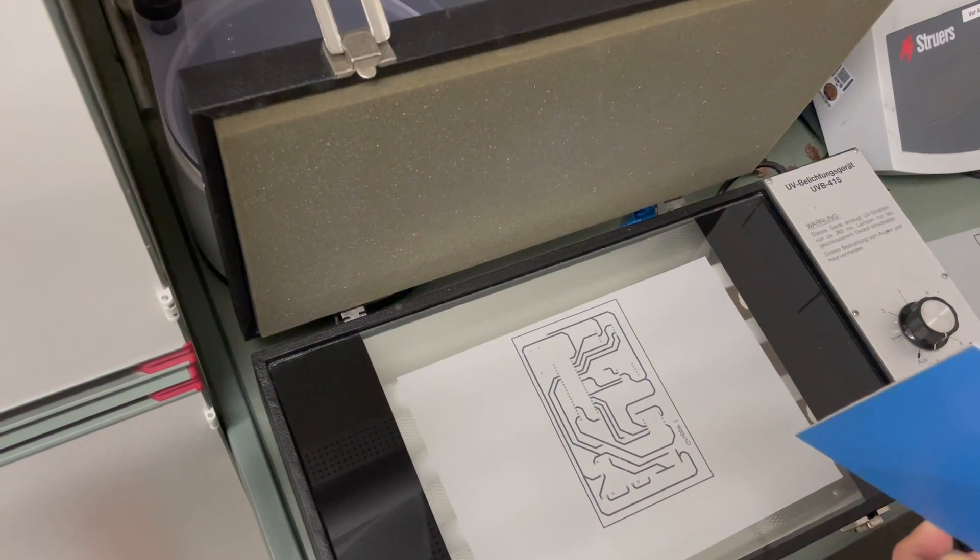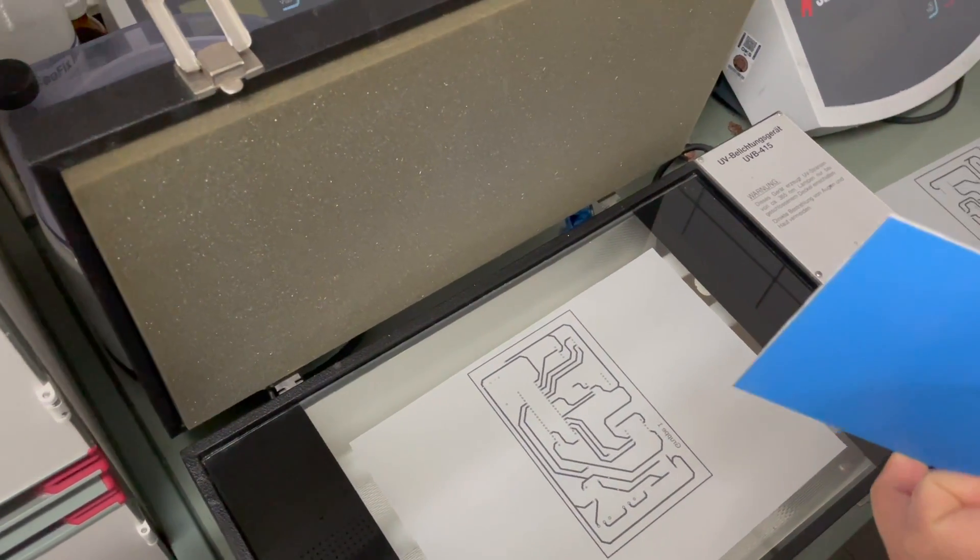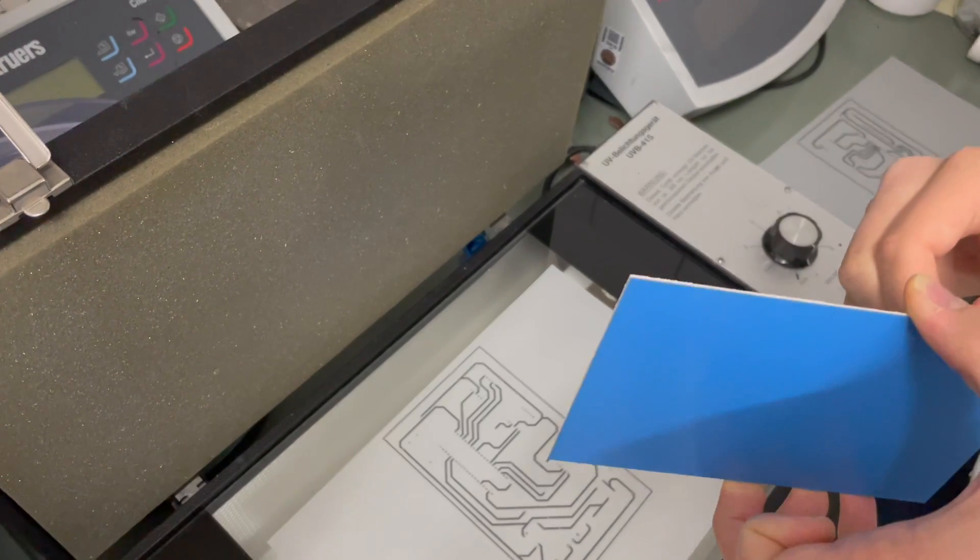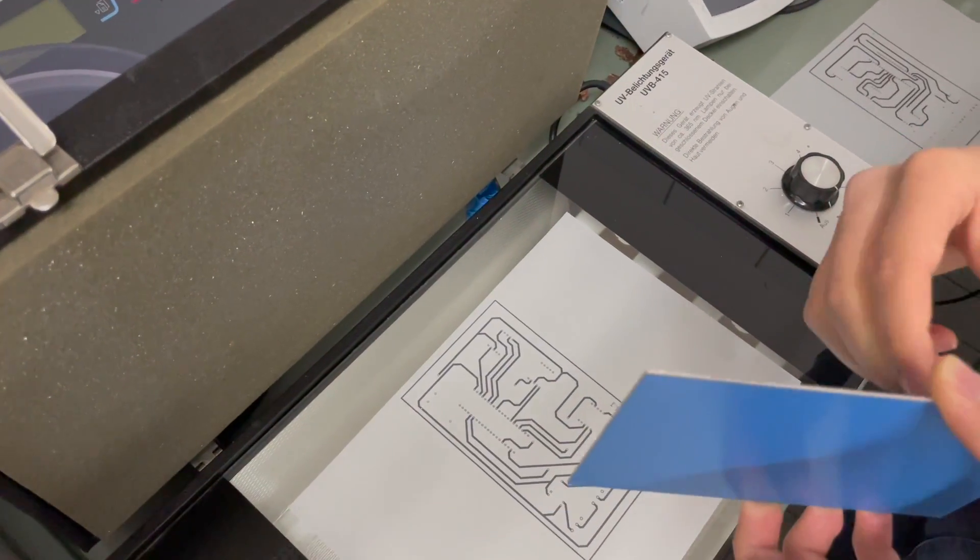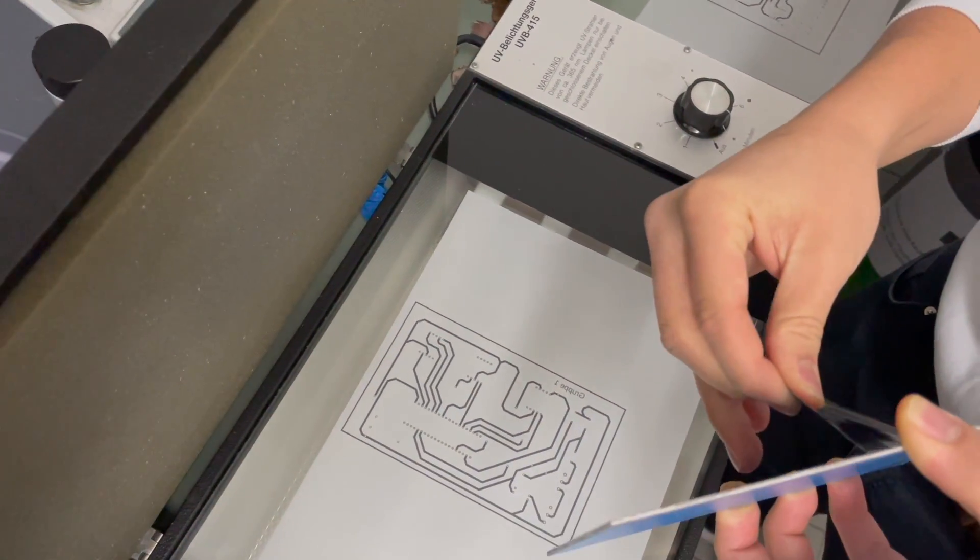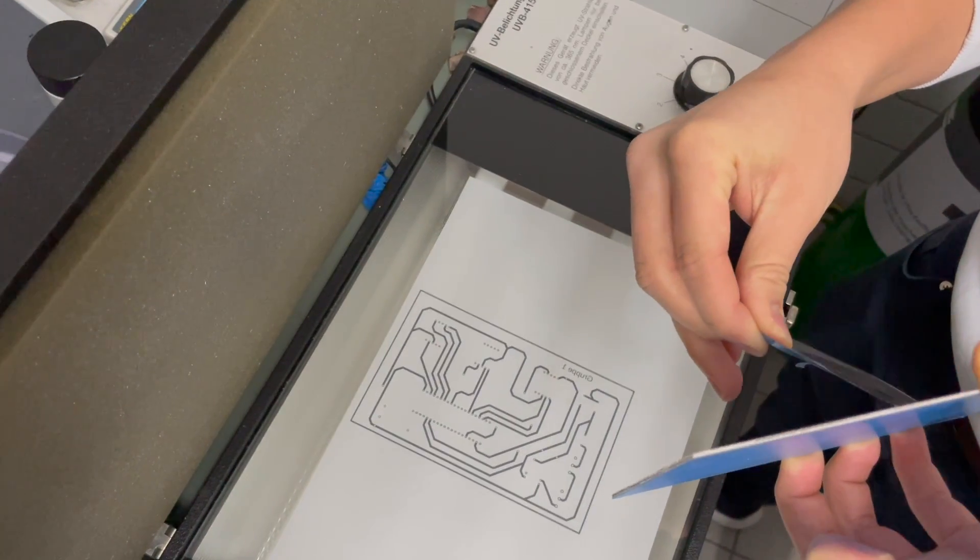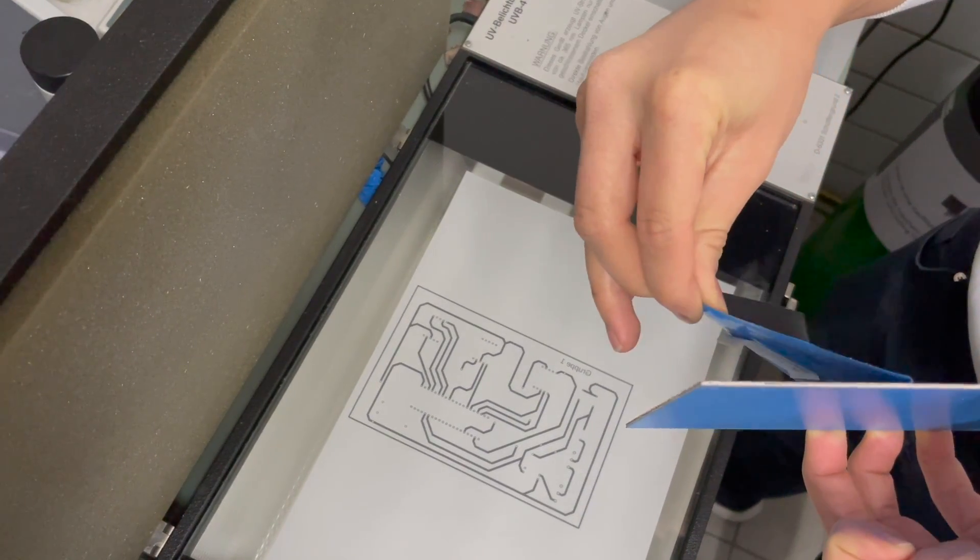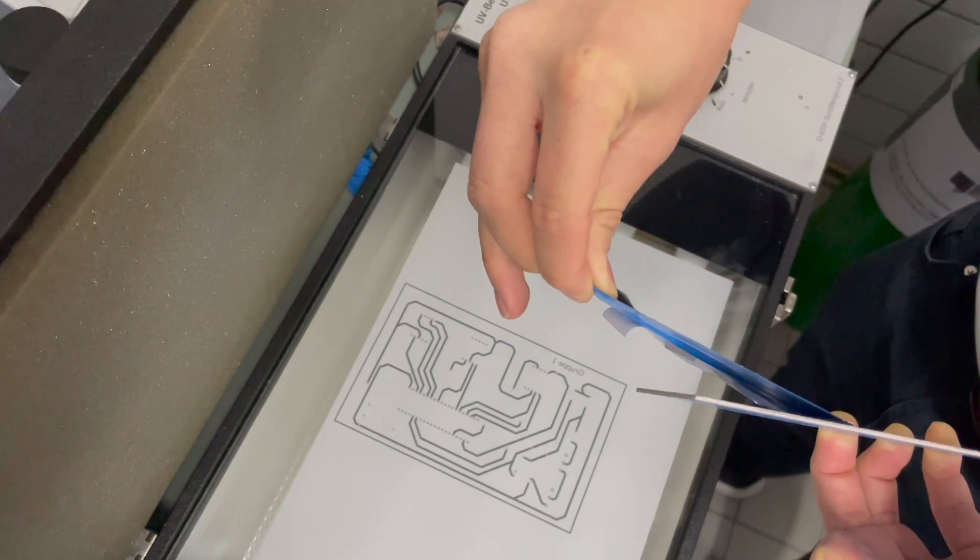For exposure we're going to use a circuit board raw material which is already coated in a photosensitive film, which is also the reason why it's covered in this black and blue light protective material to protect it from UV light during transport or storage.